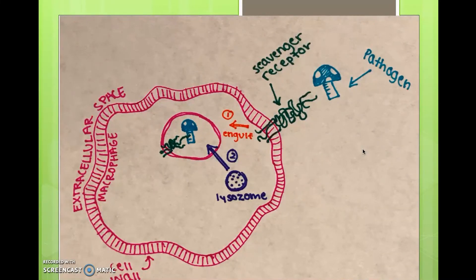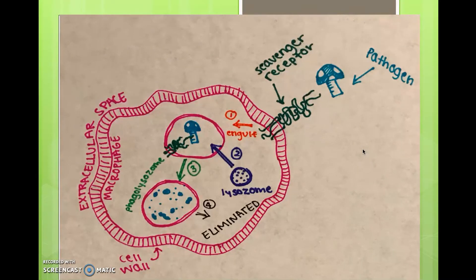Lysosomes are organelles which contain enzymes and, as pictured here, fuse with the pathogen-carrying vesicle and empty degrading compounds into the vesicle. This combination creates a phagolysosome, which combines the phagocytic membrane and a lysosome, and continues degrading the pathogen. When the contents are completely degraded, the pathogen is eliminated.